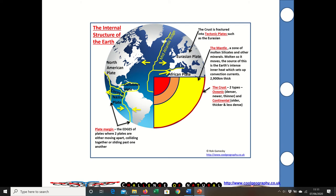You have the mantle which is a zone of molten silicates and other minerals. It's molten so it moves and the source of heat drives convection currents and it's about 2900 kilometers thick.